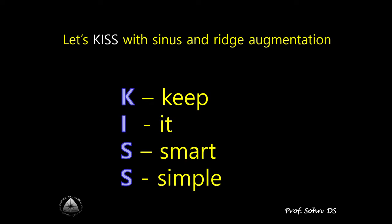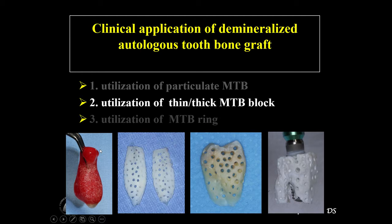It is very critical to keep the KISS principle in mind to perform minimally invasive implant surgery — KISS stands for 'Keep It Smart and Simple.' We can make three types of tooth bone from patient's extracted teeth: particulate tooth bone graft (sticky tooth bone graft), thin tooth block, thick tooth block, and ring tooth block.